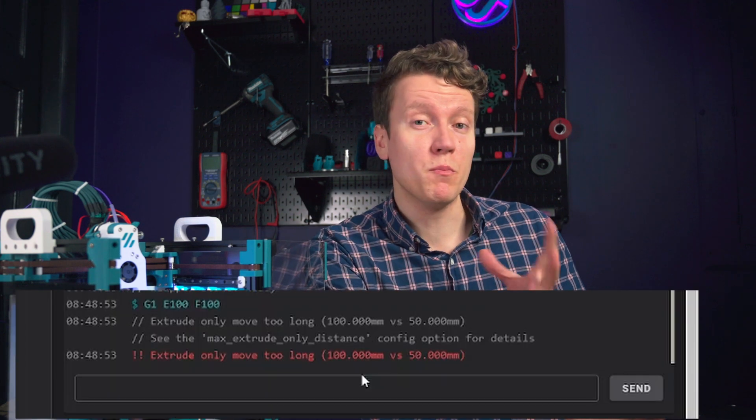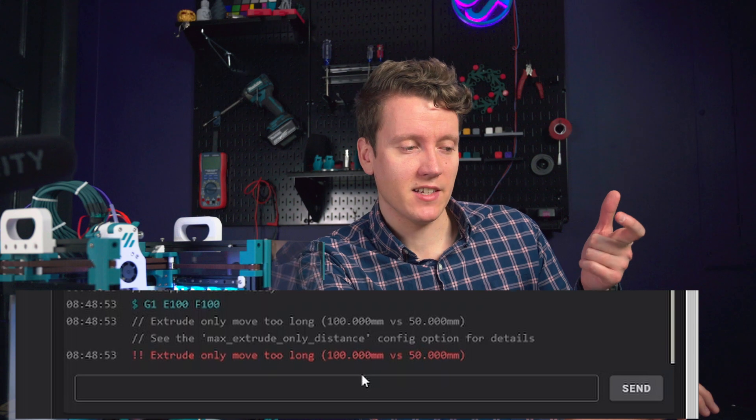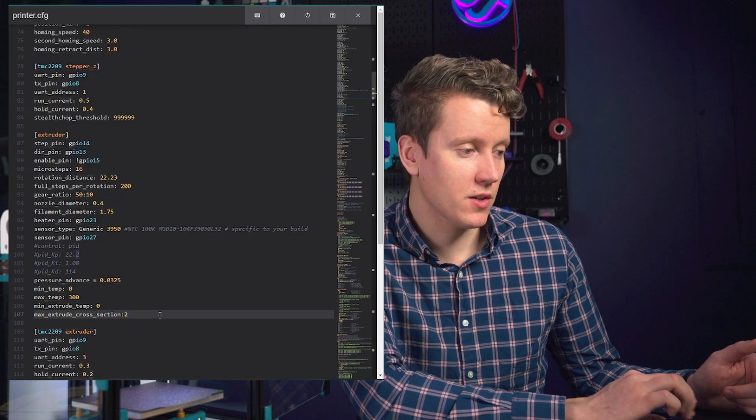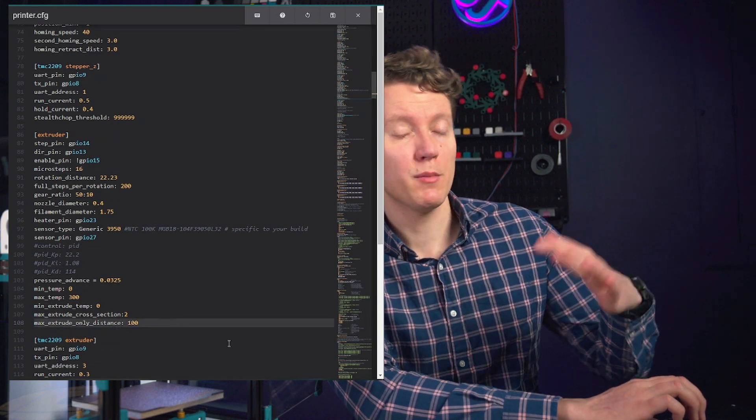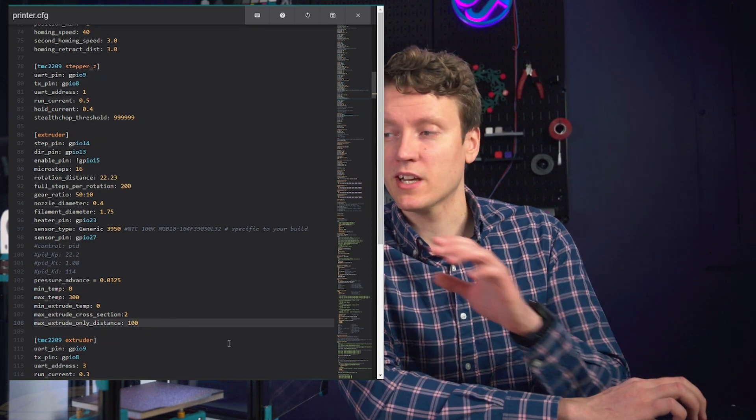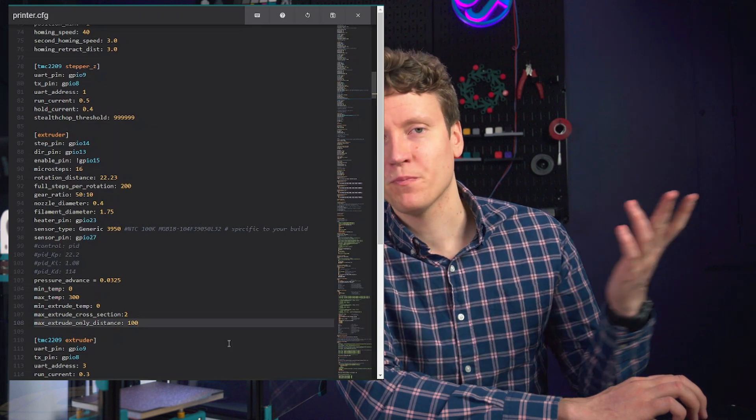So I got another error that you may run into. The max extrude only distance. The default value in Klipper is 50. So you could send just two 50 millimeter retraction commands. Or you can go into your config file and increase that value. So under your extruder definition, you can add whatever distance you want. I'm going to bump it up to 100 because for calibrating your extruder, I like 100 save and exit. Now we should be able to send that same command.